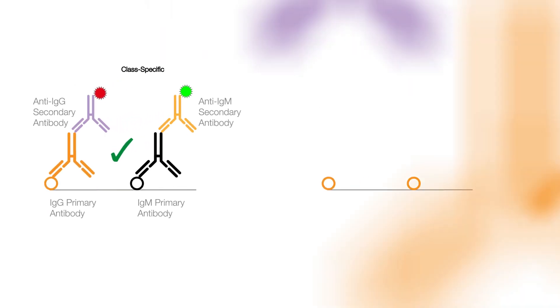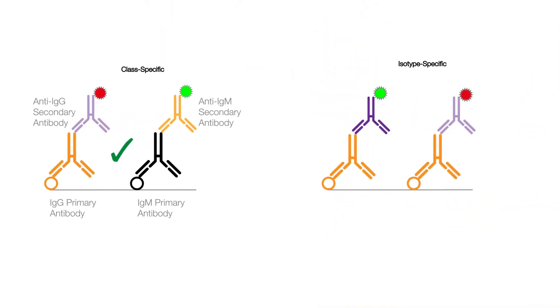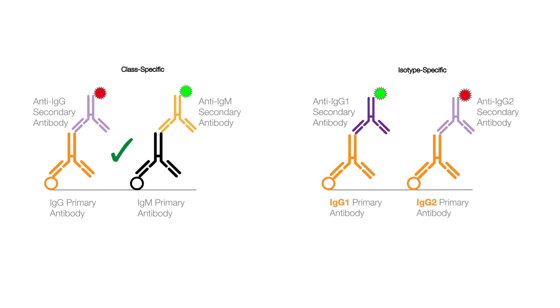Primary antibodies from the same species but of different isotypes, such as IgG1 and IgG2, provide another possible solution.